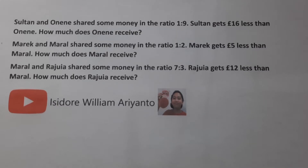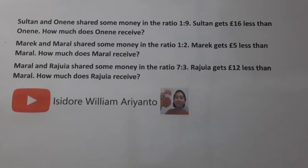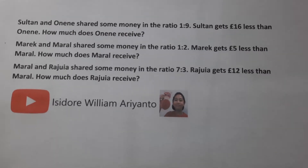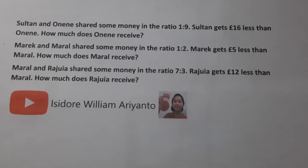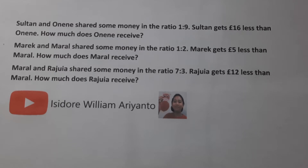I'm Isidur Lama Rianto. Today we are going to talk about ratio difference. Sultan and Onen shared some money in the ratio of 1:9. Sultan gets 16 pounds less than Onen. How much does Onen receive?